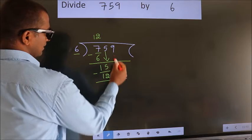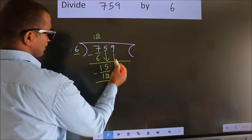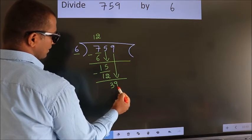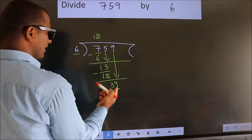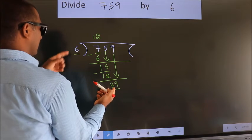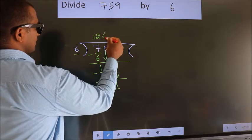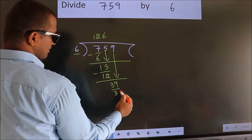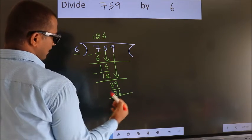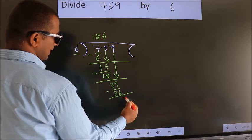After this, bring down the beside number. So 9 down. So 39. A number close to 39 in 6 table is 6, 6, 36. Now we subtract. We get 3.